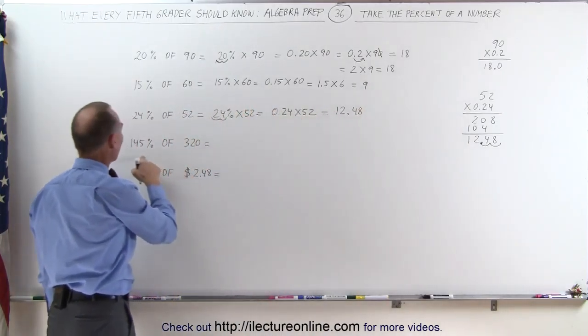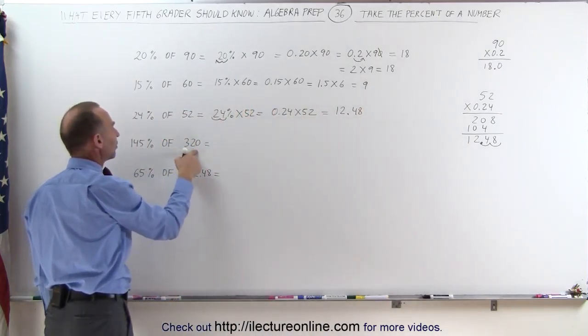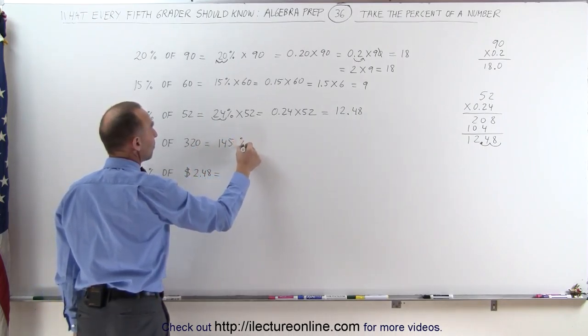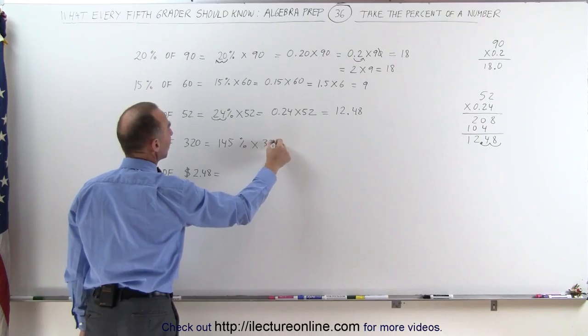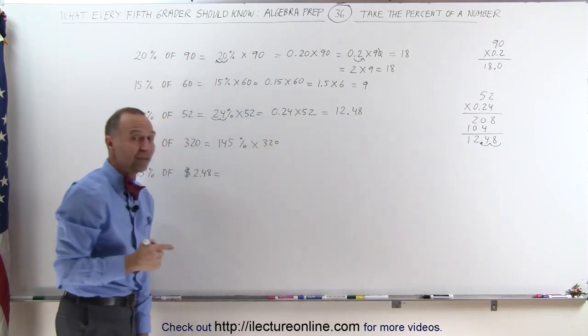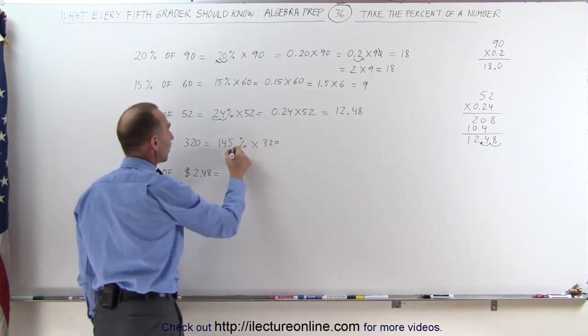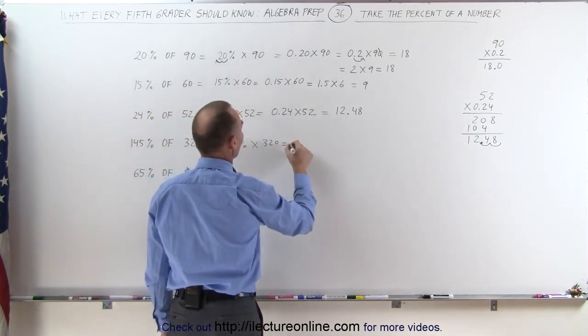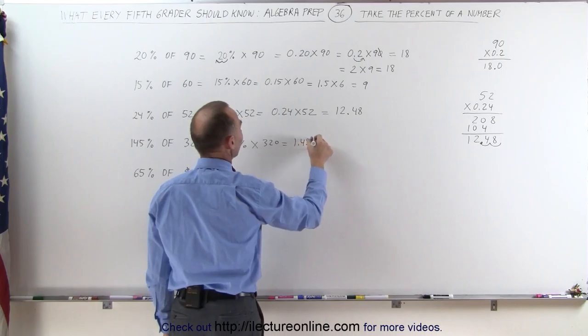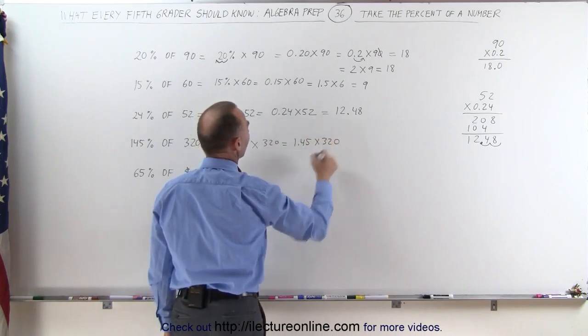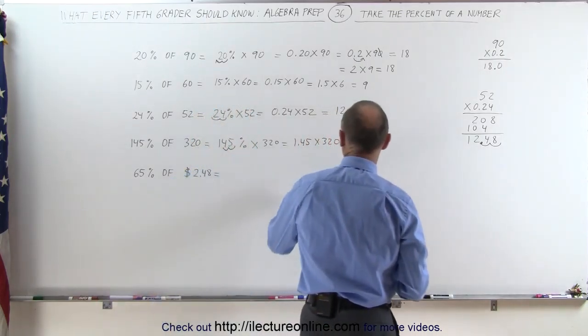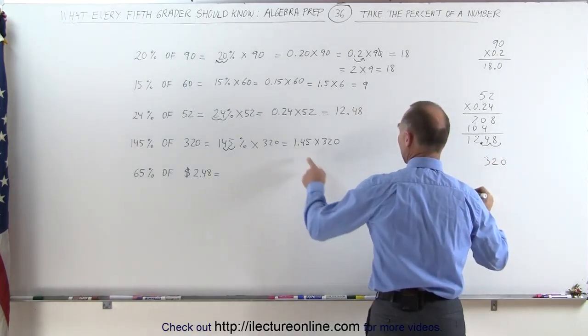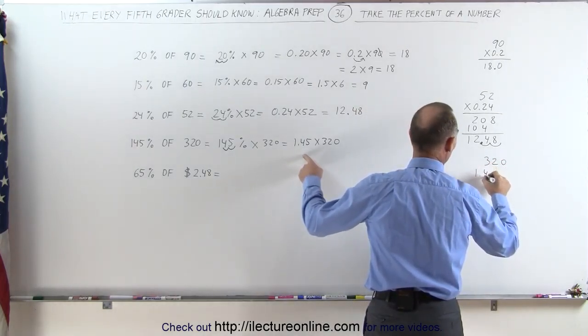Next example: 145% of 320. Again, that means 145% multiply times 320. And 145% can be turned into a decimal by moving the decimal spot over two places. Get rid of the percent sign. This is 1.45 times 320. Writing this down, we have 320 times 1.45.